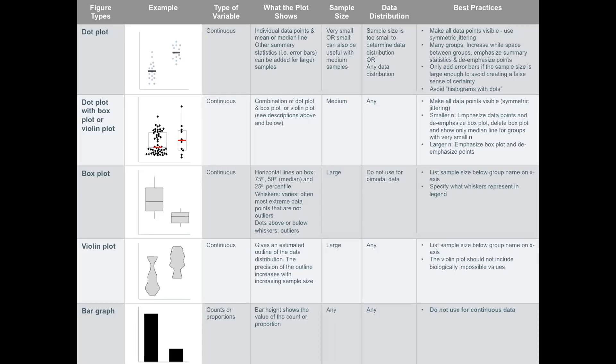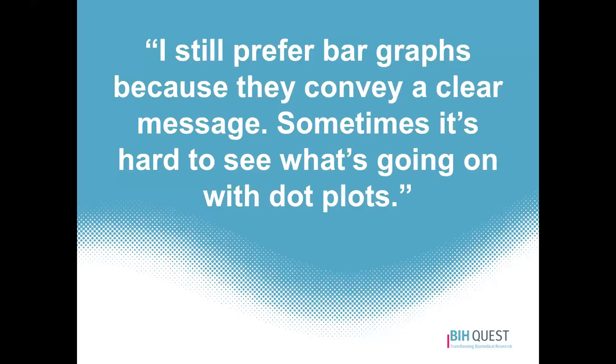Bar graphs are designed for counts or proportions — situations where the bar is literally filled with data and the bar height shows the value of the counts or proportions. In these situations, you should definitely use a bar graph. However, I would encourage you to move bar graphs to your 'dead to me' list when you're working with continuous data.